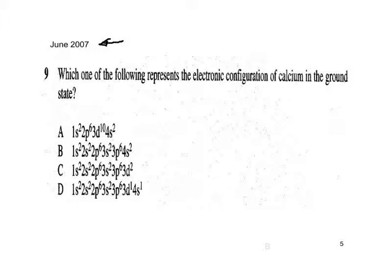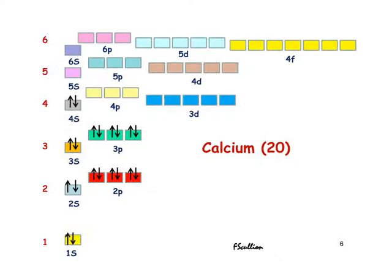So, what's your answer to question nine? Did you get B? 9B is the answer. Let's look at its detailed configuration. Calcium's atomic number is 20. We put 2 in the 1s level, 2 in the 2s level, 6 into the 2p level, 2 into the 3s, 6 into the 3p, and that leaves 2 to go into the 4s level. For short, we could write the configuration as [Ar]4s².